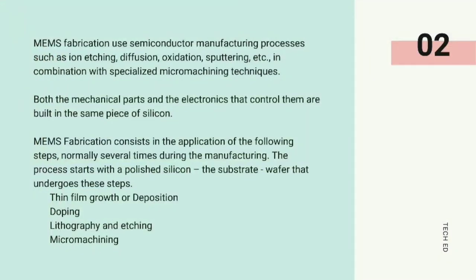MEMS fabrication is a technique that uses semiconductor manufacturing processes such as ion etching, diffusion, oxidation, sputtering, etc., in combination with specialized micro-machining techniques. This machining occurs in the range of 1 to 100 micrometers in size, where both the mechanical parts and the electronics that control them are built in the same piece of silicon.